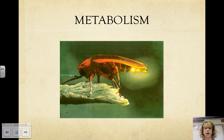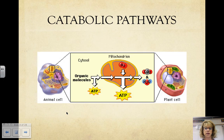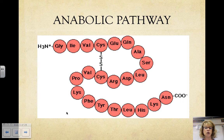Light is a form of energy, and the firefly's ability to make light energy from chemical energy is an example of life's dependence on energy conversions. Some metabolic reactions release energy by breaking down large molecules — they are called catabolic pathways. A metabolic pathway that releases energy by breaking down complex molecules to simpler compounds is a catabolic pathway; an example is cellular respiration. Anabolic pathways are metabolic pathways that synthesize a complex molecule from simpler ones. Energy is used for anabolic pathways, and amino acids building into proteins is an example of an anabolic pathway.